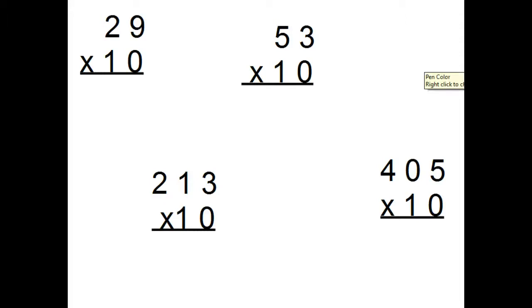29 times 10, put down my 29, add a zero to the end, 290. 53 times 10, put down my 53, add the zero to the end, 530.